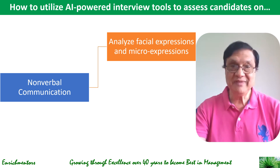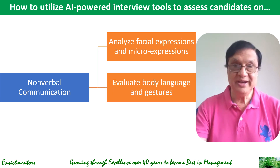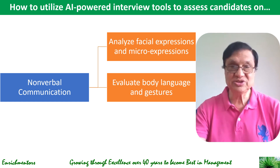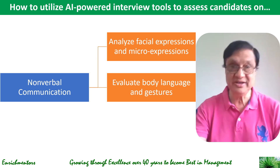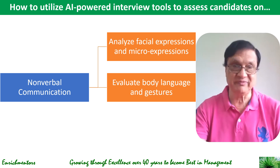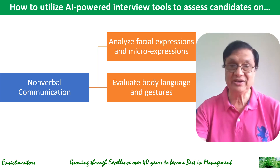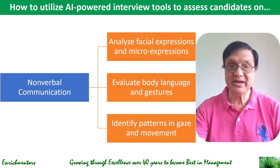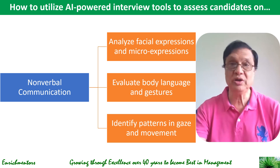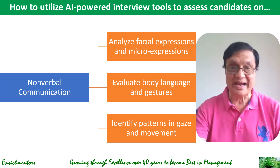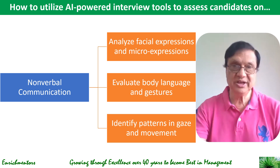The second thing is to evaluate body language and gestures using AI tools. AI can analyze the candidate's body language and gestures to assess their confidence, openness, and overall demeanor, helping identify candidates who are present, professional, and able to make positive impressions. Third, AI can identify patterns in the candidate's gaze and movements to assess their attentiveness, engagement, and overall comfort level, helping identify candidates who are actively listening, engaging in the conversation, and at ease in the interview setting.